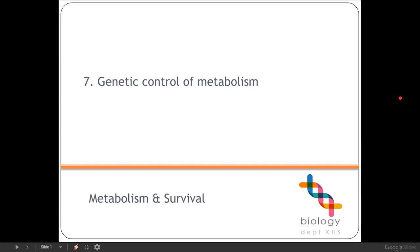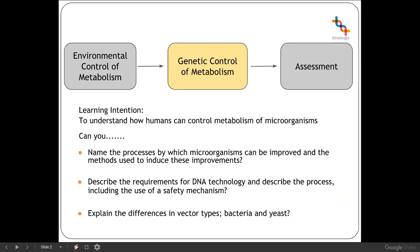Hello and welcome to this lesson for Higher Biology, which today is looking at the genetic control of metabolism. Previously we've looked at how the metabolism of microorganisms can be controlled by changing their environment, and what we're going to look at today is how we can control their genetics — changing their genetics in order to allow microorganisms to produce different metabolites than what they would naturally.